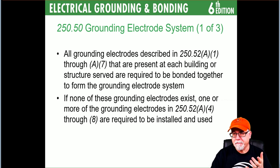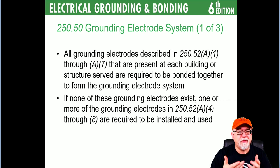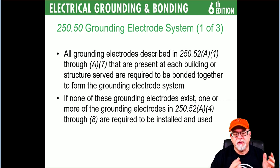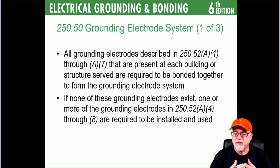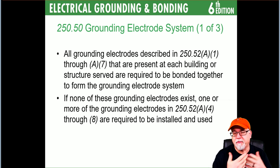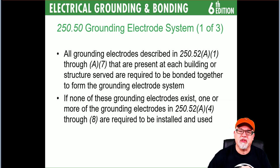The key difference is that 250.52(A)(1), (A)(2), and (A)(3) are typically things inherent to construction — concrete encased electrodes designed in the footer, or a water pipe in contact with 10 feet of earth. However, if they are not present at the building, then you have to establish one using 250.52(A)(4) through (A)(8).